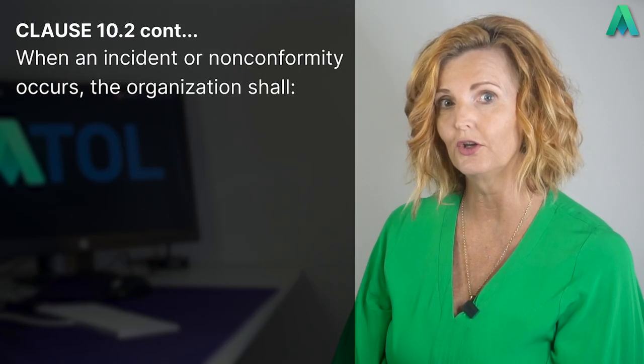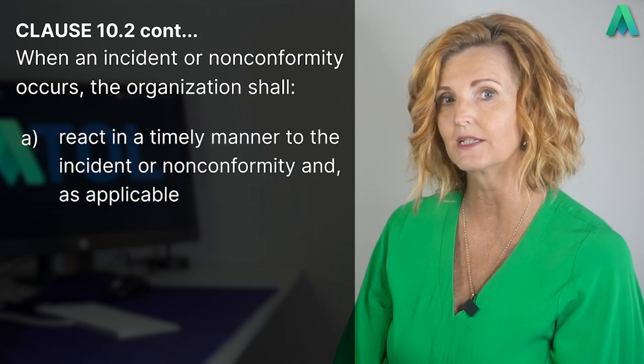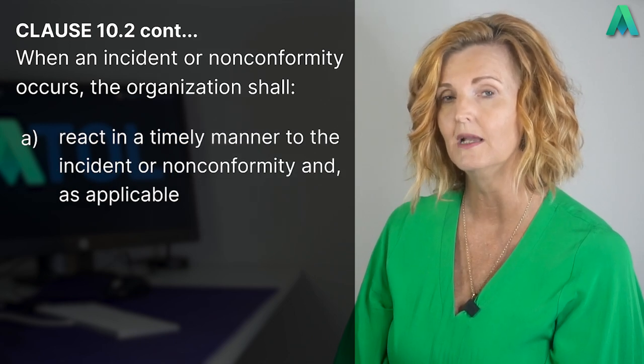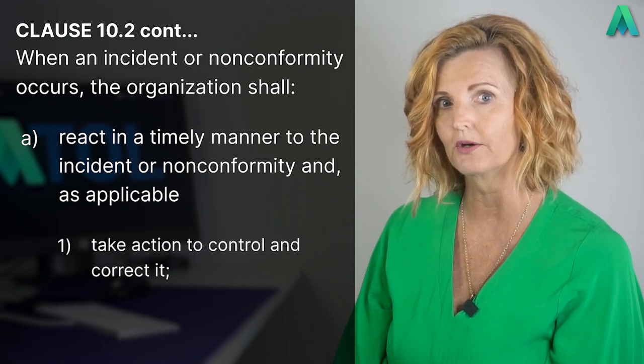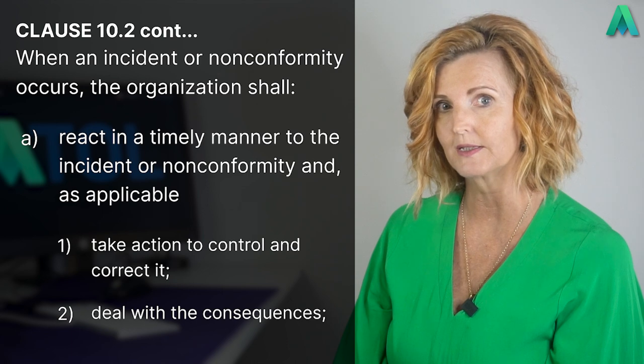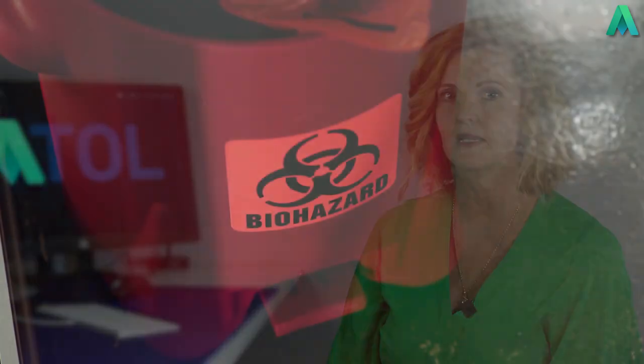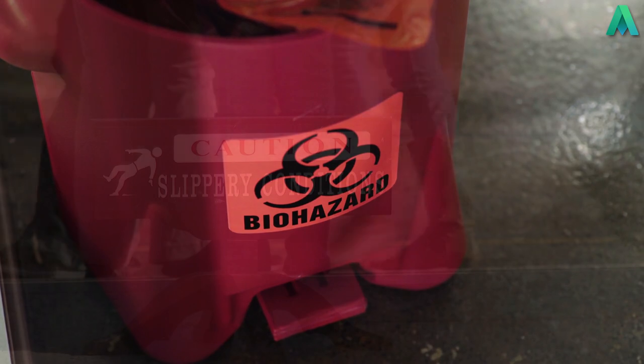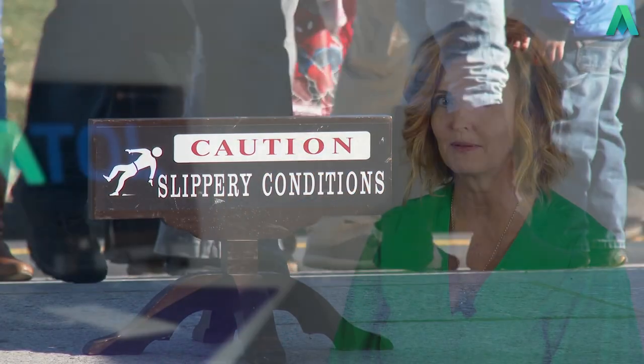When an incident or non-conformity occurs, the organisation shall: A. React in a timely manner to the incident or non-conformity. And as applicable: one, take action to control and correct it; two, deal with the consequences. This is the first step we take to deal with the consequences of an incident or non-conformance. So if it is an incident, it would be managing an injury, isolating the area or machine that may have caused it, and so on — basically mop up what's happened and put some actions in place immediately to ensure nobody else is injured. This is not the long-term fix or corrective action; it is just getting it under control initially.